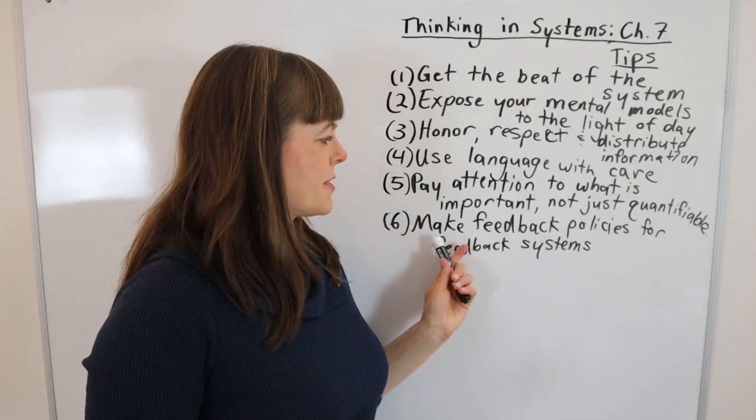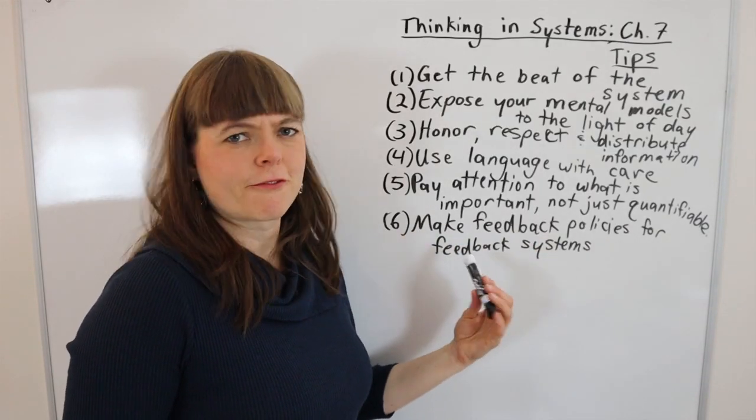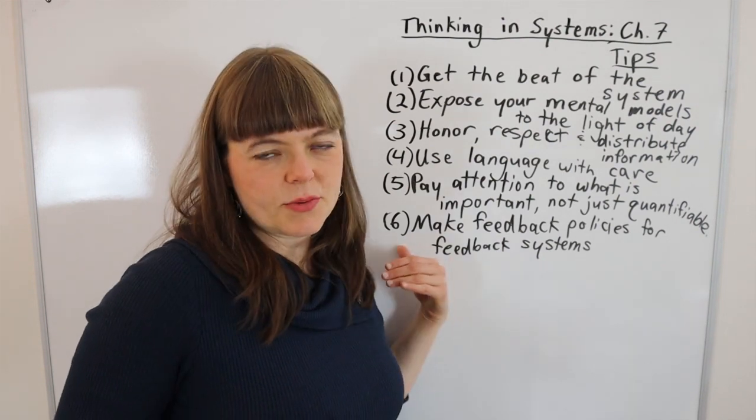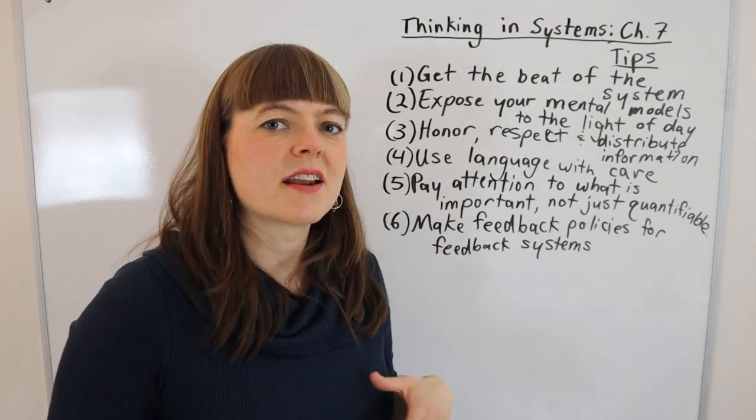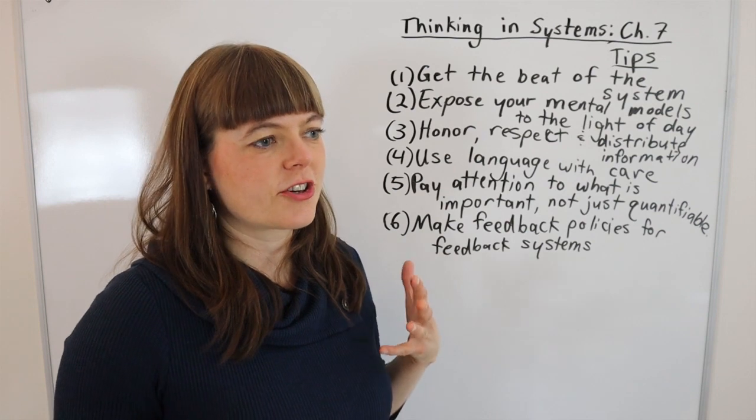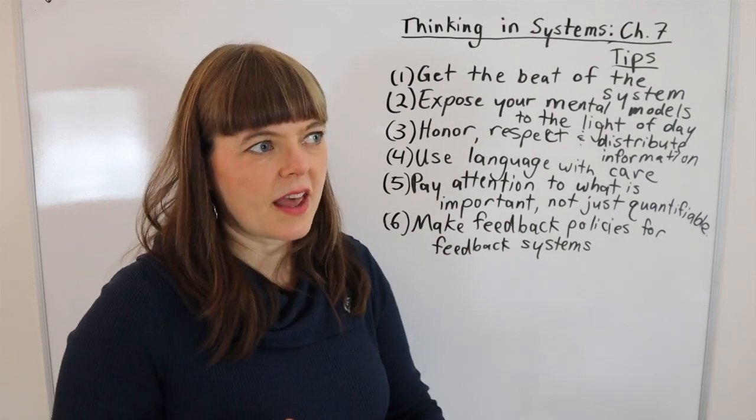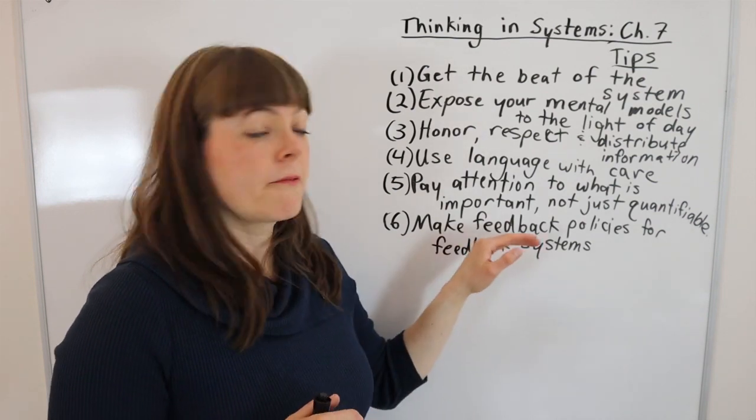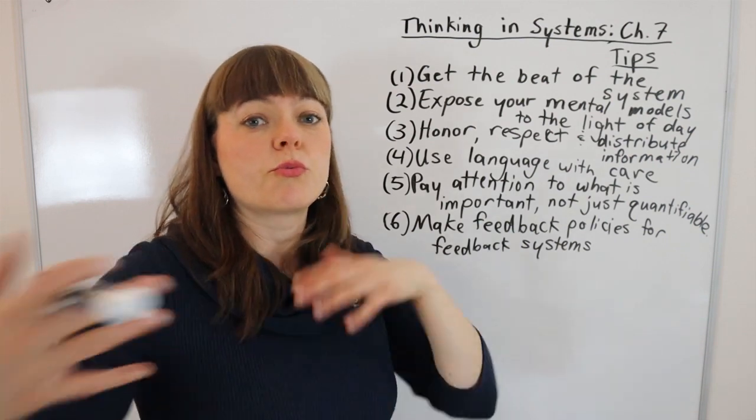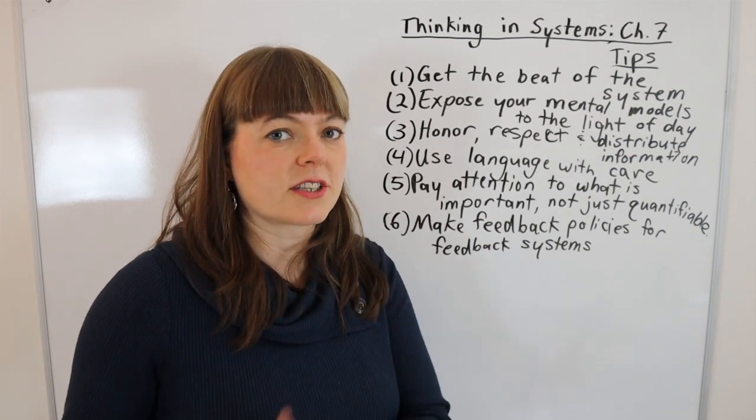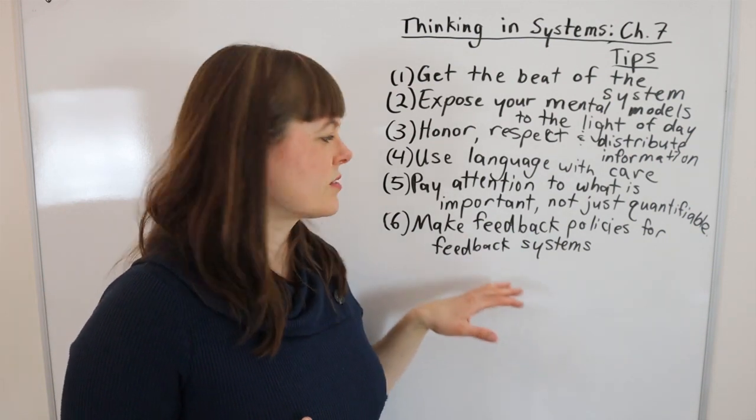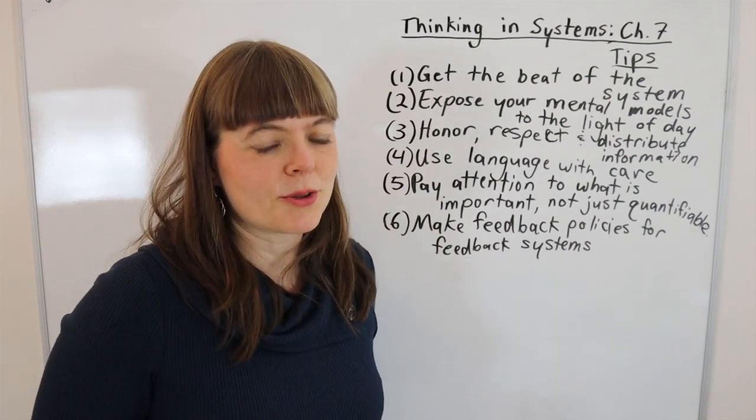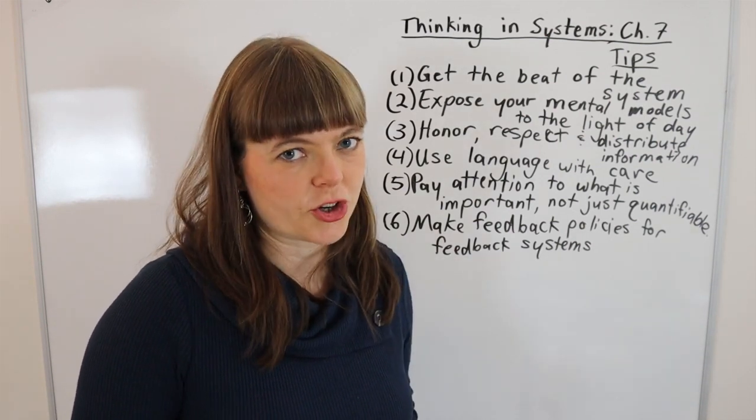Her next tip is to make feedback policies for feedback systems. And by this one she meant that you should design learning into the systems so that managers will try something and there's some feedback policy that says oh revisit and learn from what you just did, update the rules, basically build in feedback loops that will help the system to self-organize and learn.